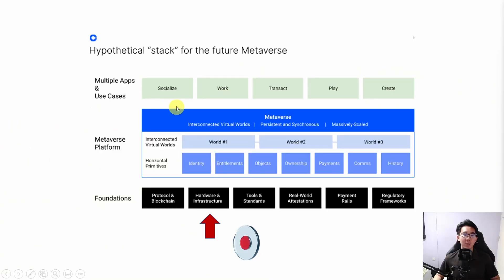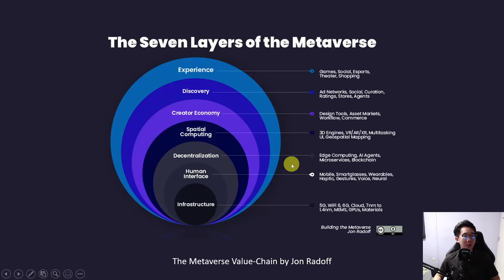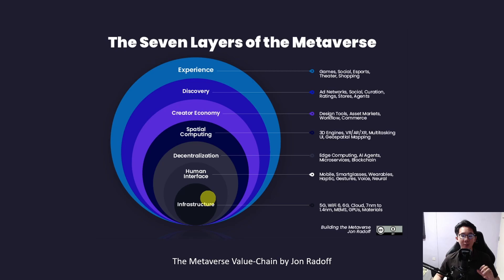Before we begin, here is this Coinbase article that talks about a hypothetical stack for the future metaverse. You can see that one of the underlying foundations is hardware and infrastructure, and Render Network fits into this category. This is another way of looking at the metaverse — the seven layers of the metaverse by John Radoff — where infrastructure is the underlying foundation that will power this whole entire metaverse economy.